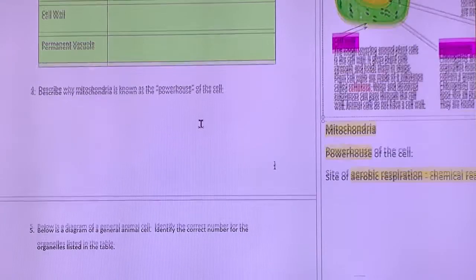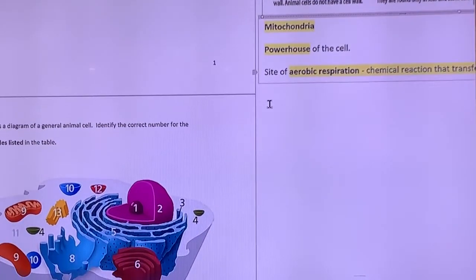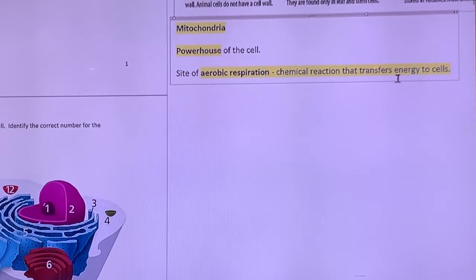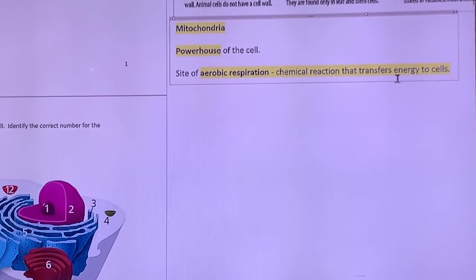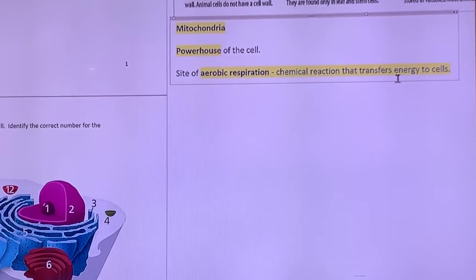Mitochondria, the powerhouse, it's just all about it's the site of aerobic respiration. So that chemical reaction that transfers energy to cells. So getting that energy for you to move around and do things for you to undergo mitosis and make more cells. That's why we eat food. So we can move around during the day.